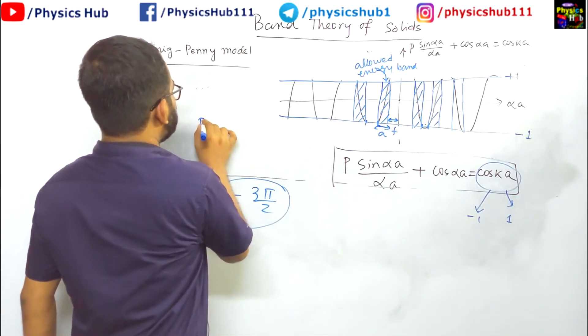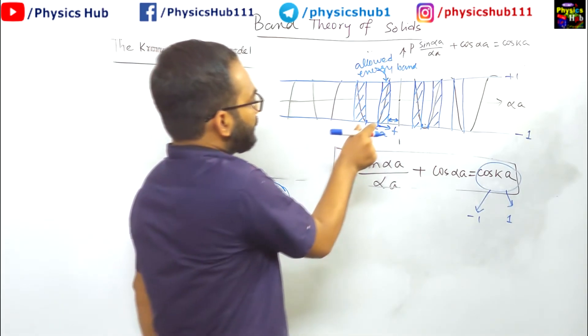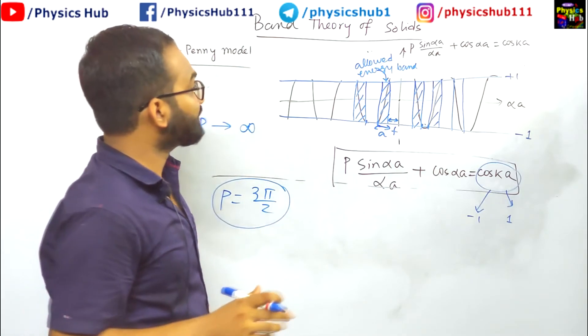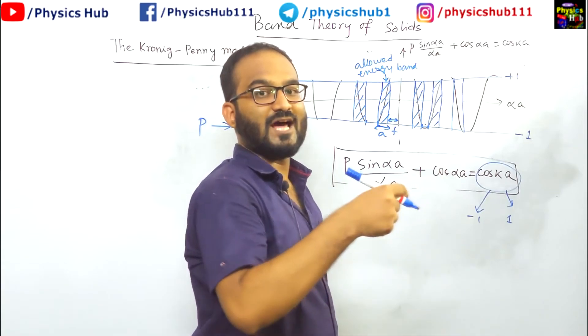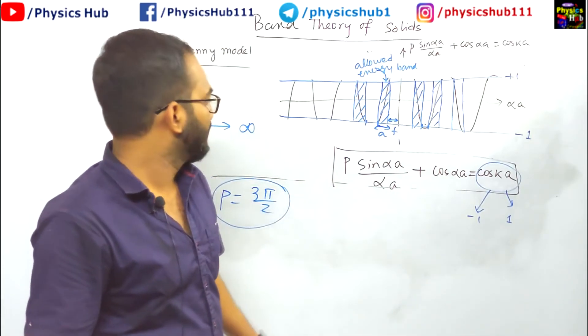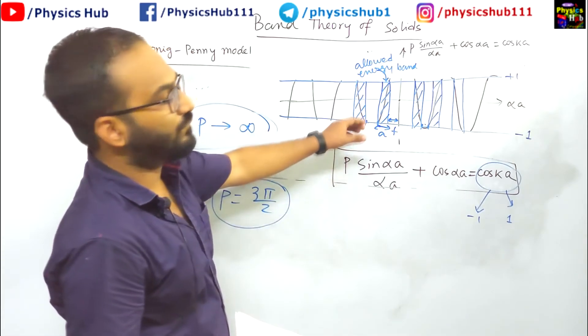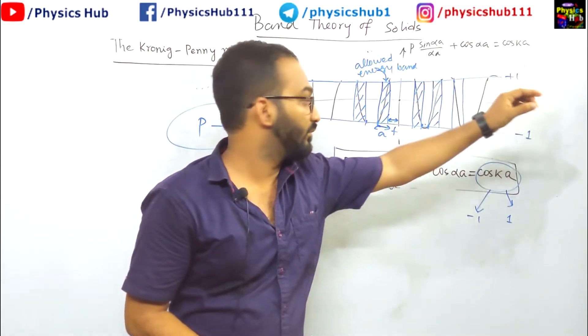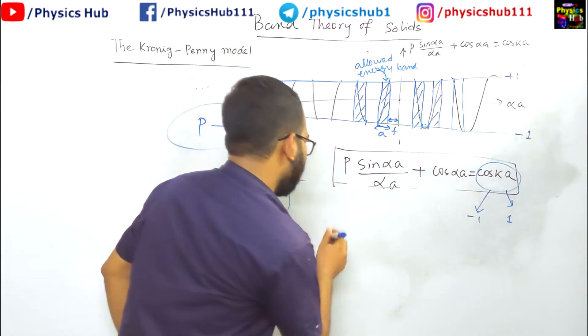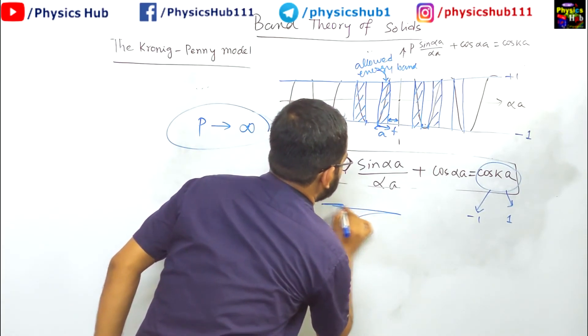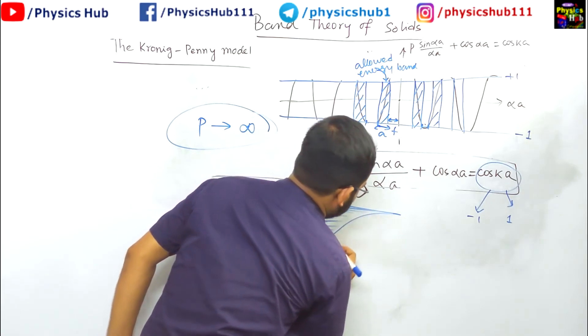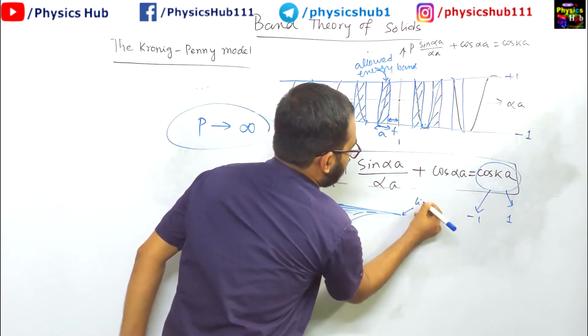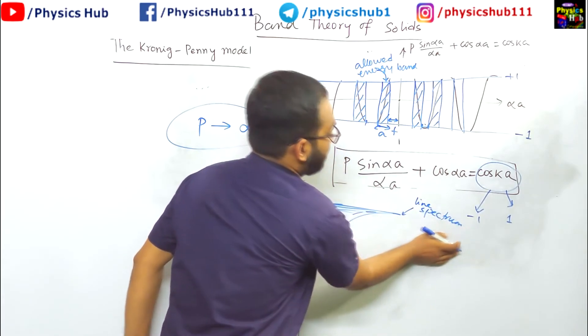Now if we increase the value of p, then this allowed energy region will be squeezed. And when you are considering p tends to infinity, instead of a band they will convert into line spectrum. We will talk about that in the next video. Like by choosing different values of p, the bandwidth can vary. And for a sufficiently high value, the band will be converted into a line spectrum. So as we are increasing the value of p, this will convert into a line spectrum. We will talk about it in detail in the next video.